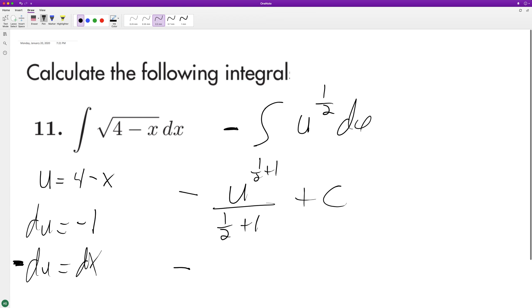So we're going to have negative u raised to the three halves, and then the three halves on the bottom becomes two thirds.